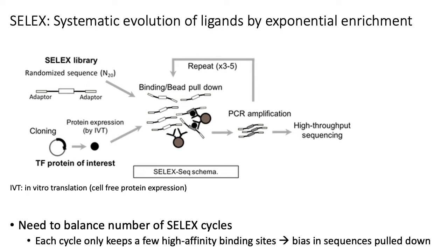You amplify those bound fragments and then repeat the procedure of selecting fragments in a biased way using your TF of interest and amplifying those bound sequences. After three to five cycles through this process, you then sequence whatever fragments are left over, and presumably those fragments are enriched for binding sites of your TF of interest.